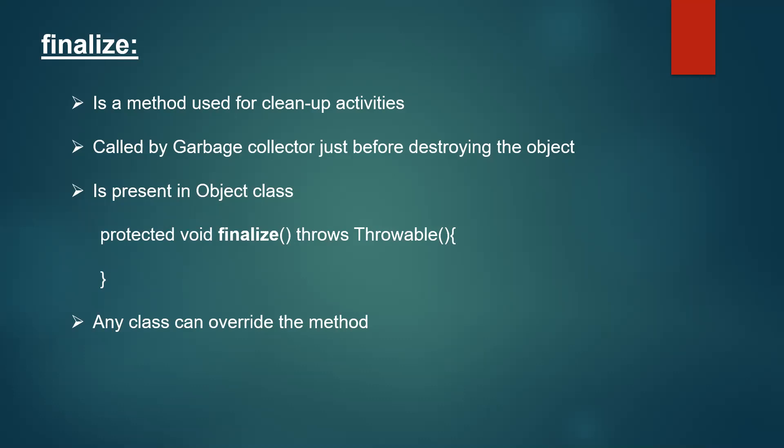The finalize method is used for cleanup activities. Both finally and finalize involve cleaning up resources, but the key difference is: finally is always associated with a try-catch block, while finalize method cleanup activities are always associated with objects. This is the main difference — finally is associated with try-catch block and finalize is associated with objects.